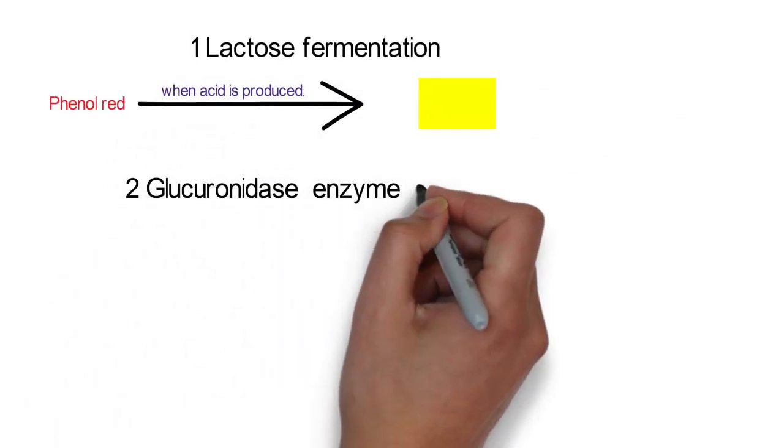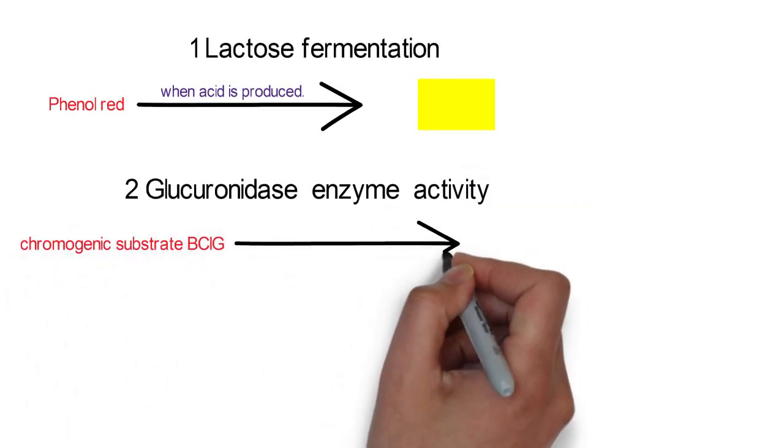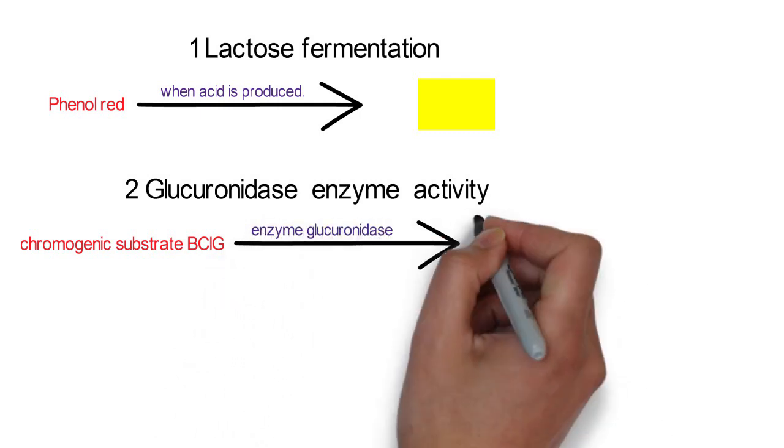The chromogenic substrate BCIG is cleaved by the enzyme glucuronidase and produces a blue chromophore which builds up in the bacterial cells.